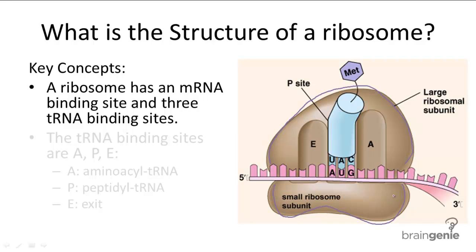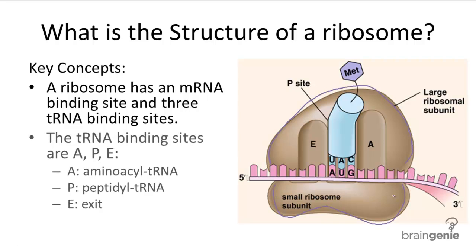Within the large ribosomal subunit, there are three zones for tRNA binding, and each zone or site has a different purpose. They're labeled from right to left: A, P, and E, which stand for aminoacyl tRNA, peptidyl tRNA, and EXIT, respectively.